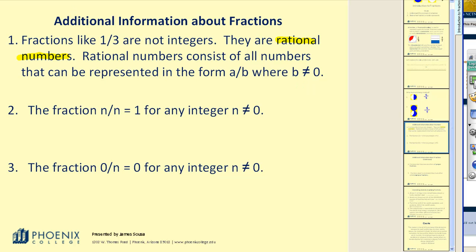Number two, the fraction N over N is equal to one for any integer N not equal to zero. Again, we illustrated that earlier. But what that is saying is, if my numerator and denominator are equal, it's going to be equal to one. That should make sense. If I have a circle that's divided into three equal parts, and I consider three of them, I would have a complete circle or one.